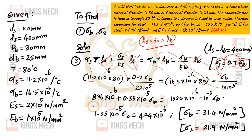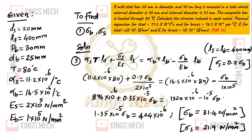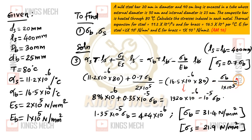We will get 896 into 10 power minus 6, plus 0.35 into 10 power minus 5 times sigma B, which equals a combined value of 1320 into 10 power minus 6. This means 1 plus more above 10 power minus 5.